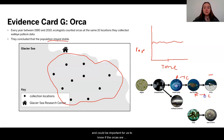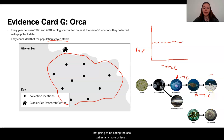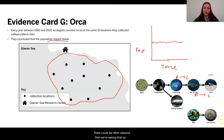If the orcas are staying the same population, then they are going to have the same need for the same amount of energy. So, they are not going to be eating the sea turtles any more or less than normal. We might not expect to see much of a change in the sea turtles because of the orcas, but there could be other reasons for that. So we might want to look back and think about what the evidence was telling us about the sea turtles.